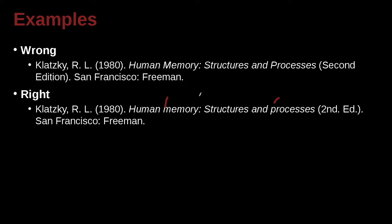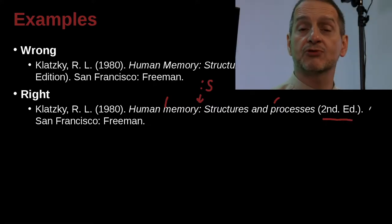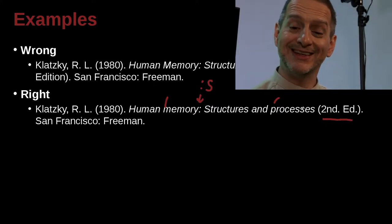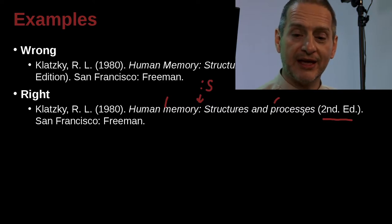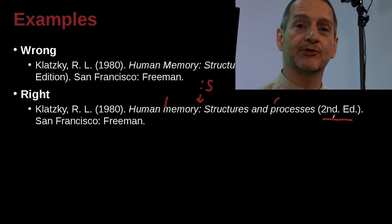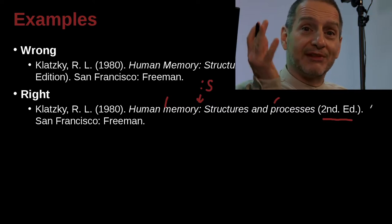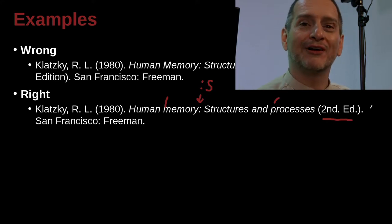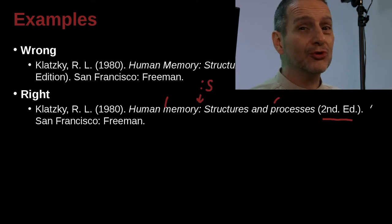However, there is a colon, and remember after a colon you do need to have a capital letter in the title. Another issue is this second edition. In APA, it's very clear that you should use the second edition written with a number, then 'ed.' with a period after both of those. That is the exact rule of APA — follow the rule and you'll be okay.